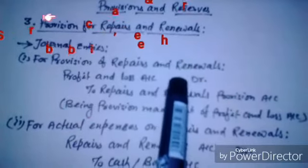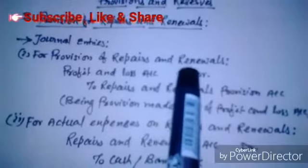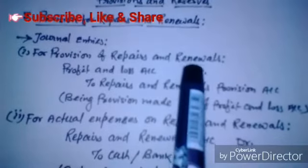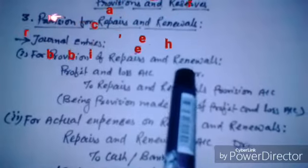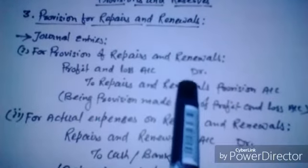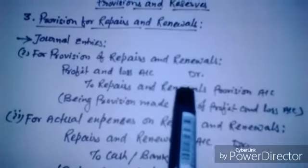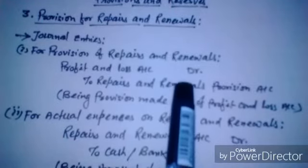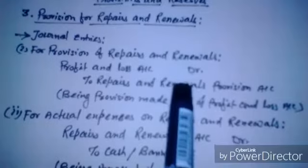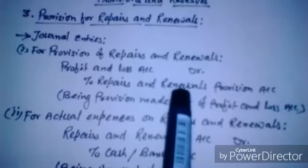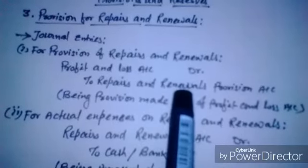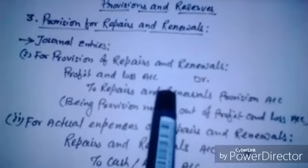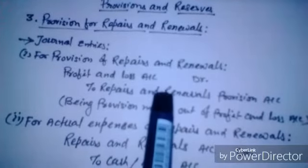The main purpose is to give uniform charges to the profit and loss account in respect of plant, machinery, or any fixed assets. When assets are new, repair charges will be less, but as they become older, repair charges go on increasing year by year, making the burden on profit and loss account heavier in later years than earlier ones.